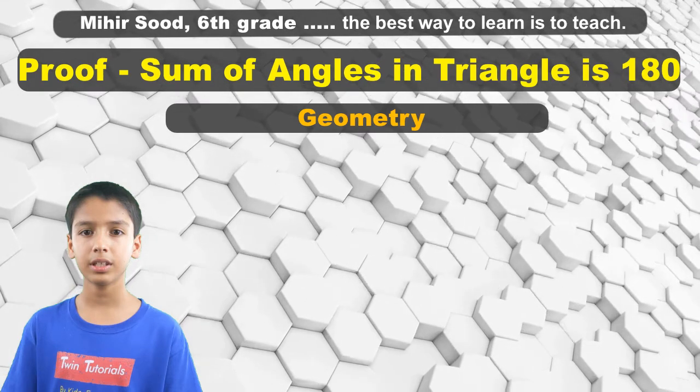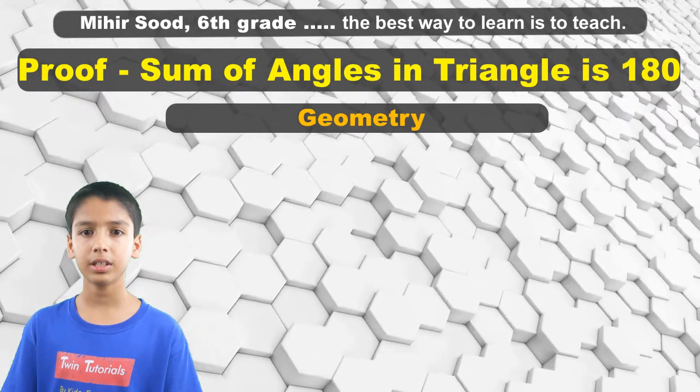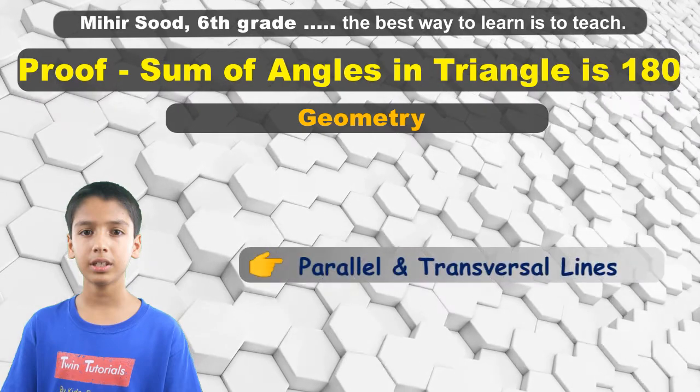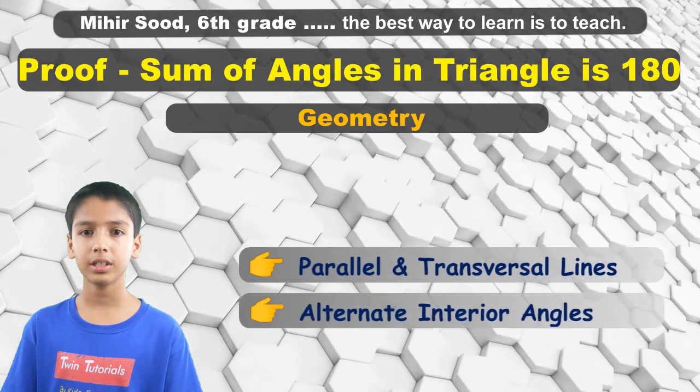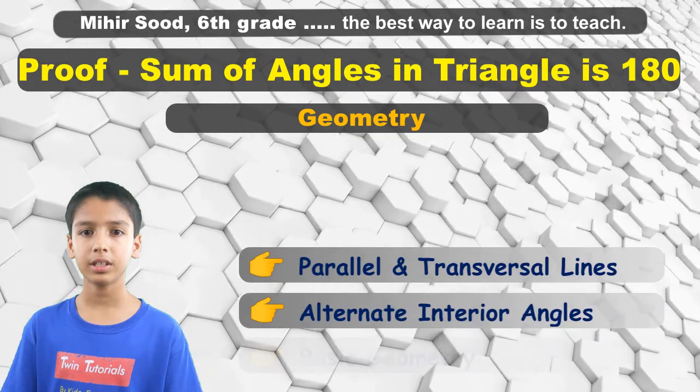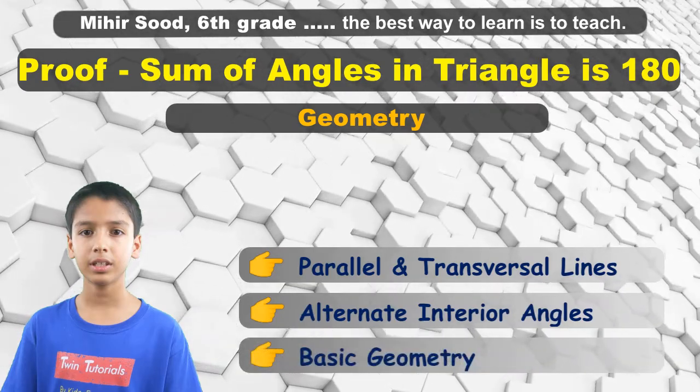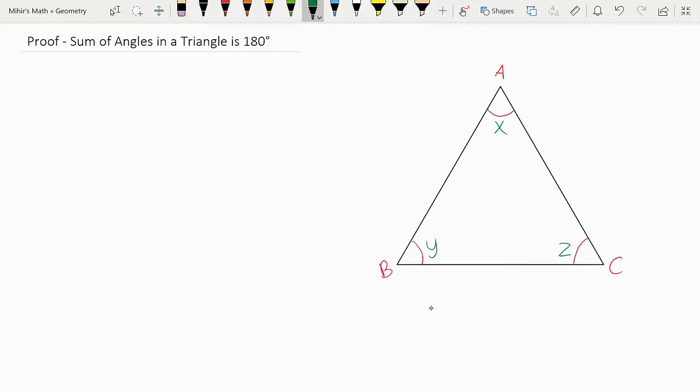Hello everybody, in this video we will be using the concept of parallel and transversal lines, alternate interior angles, and some basic geometry. Let's get started. We're going to be proving that the sum of angles in a triangle add up to 180 degrees.